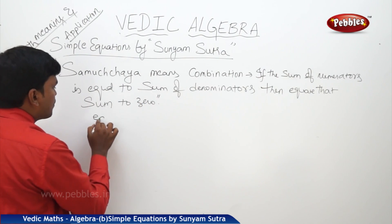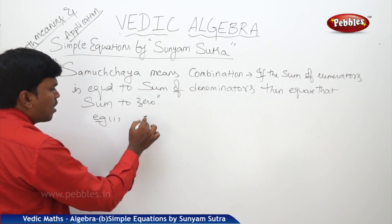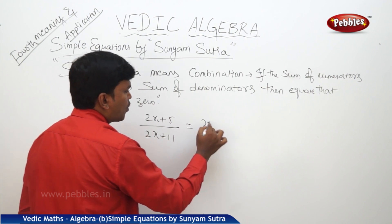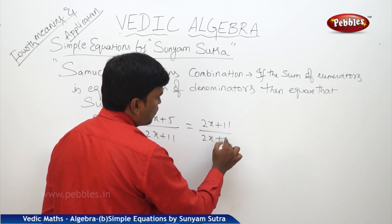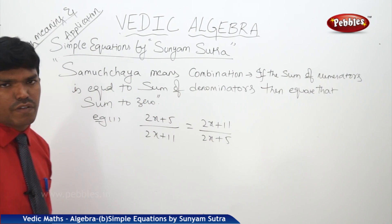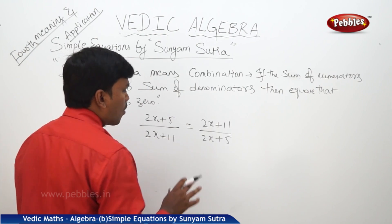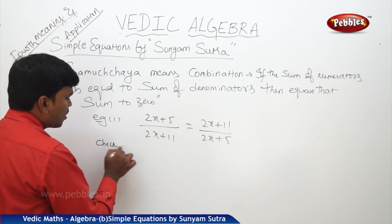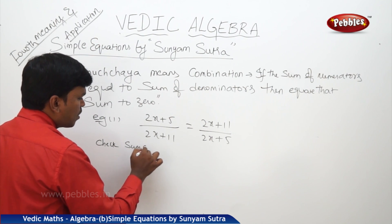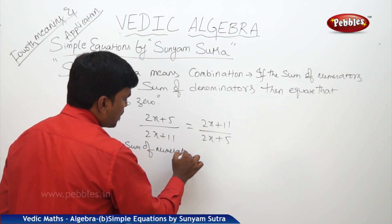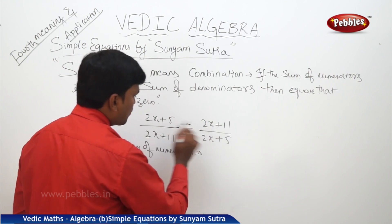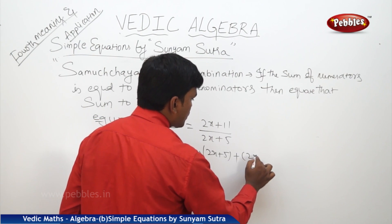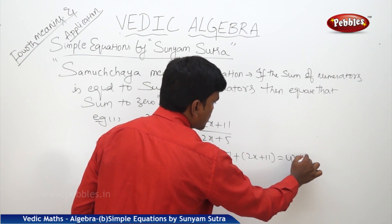Let us take an example: (2x + 5)/(2x + 11) = (2x + 11)/(2x + 5). I want to find out the solution of this equation. Simply observe the numerator terms first. Check the sum of numerators: 2x + 5 plus 2x + 11 = 4x + 16.